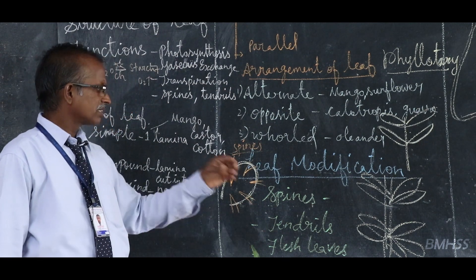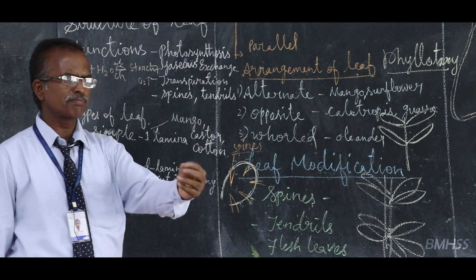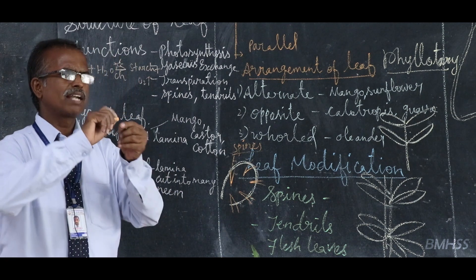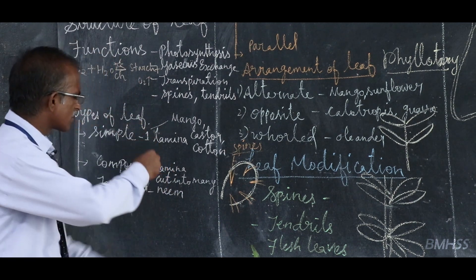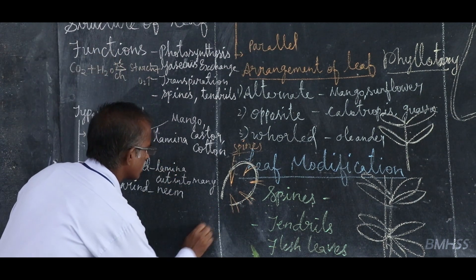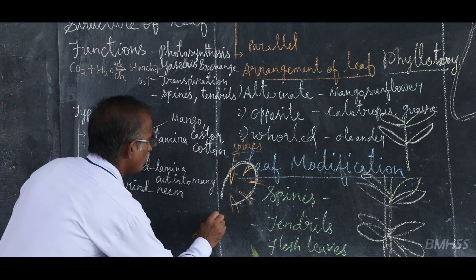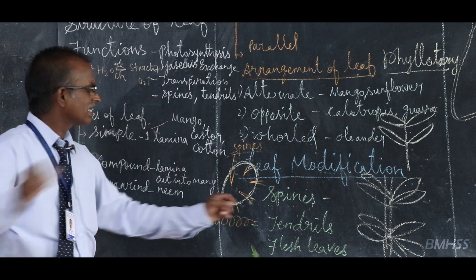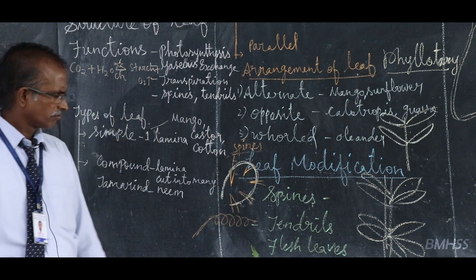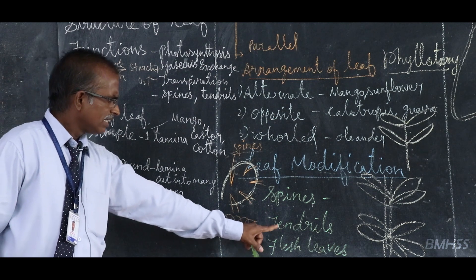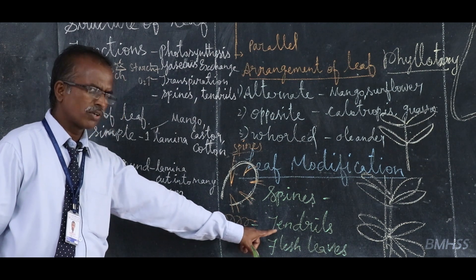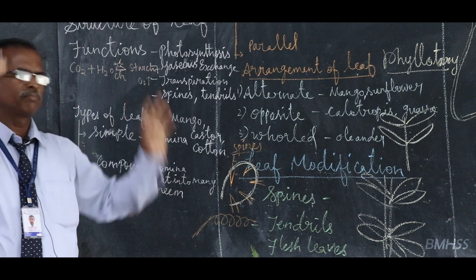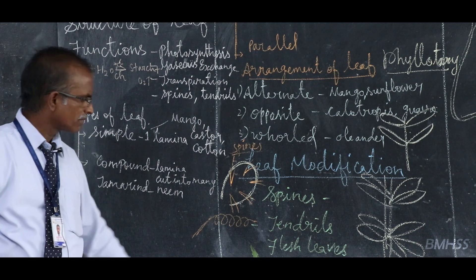In the case of sweet pea and garden pea, the leaf is changed into a very minute, coiled spring-like structure called a tendril. This helps the plant to climb.